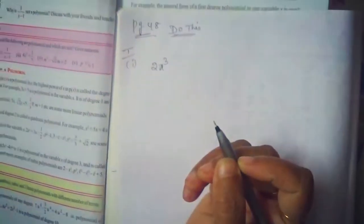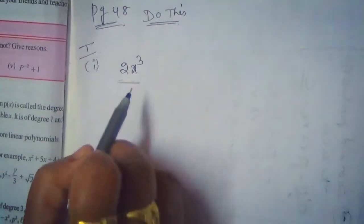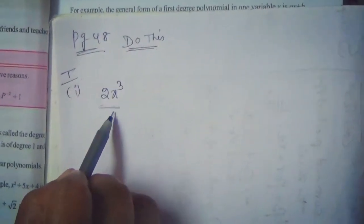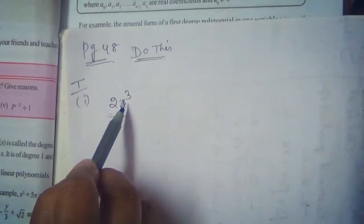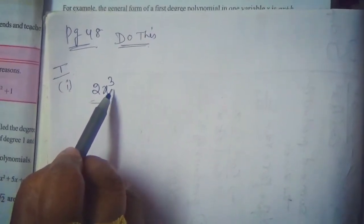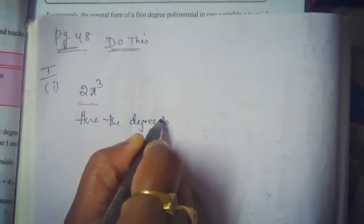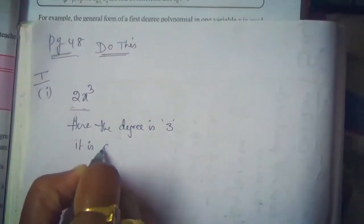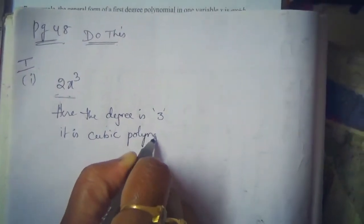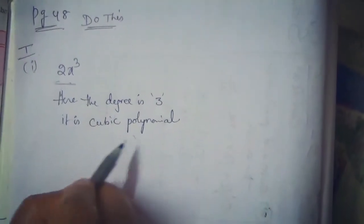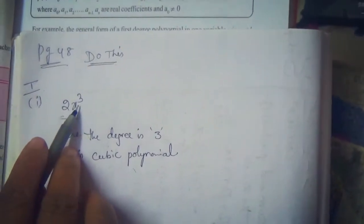The first expression is 2x³. It has only one term, so it is a monomial. The power of x is 3, hence it is a cubic polynomial. There is no negative power, so it is a polynomial. The degree is 3 — it is a cubic polynomial.